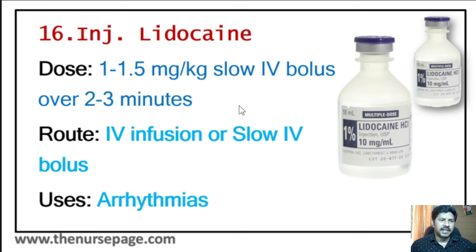Twenty-eighth injection is oxytocin. Emergency uses include induction and augmentation of labor, prevention or treatment of postpartum hemorrhage, and management of incomplete or missed abortion. Route of administration is IV injection, IV infusion, or IM injection. Dosage is 10 to 40 units in 1000 milliliter of compatible solution infused at 1 to 2 milli-units per minute, or IM injection of 10 units.